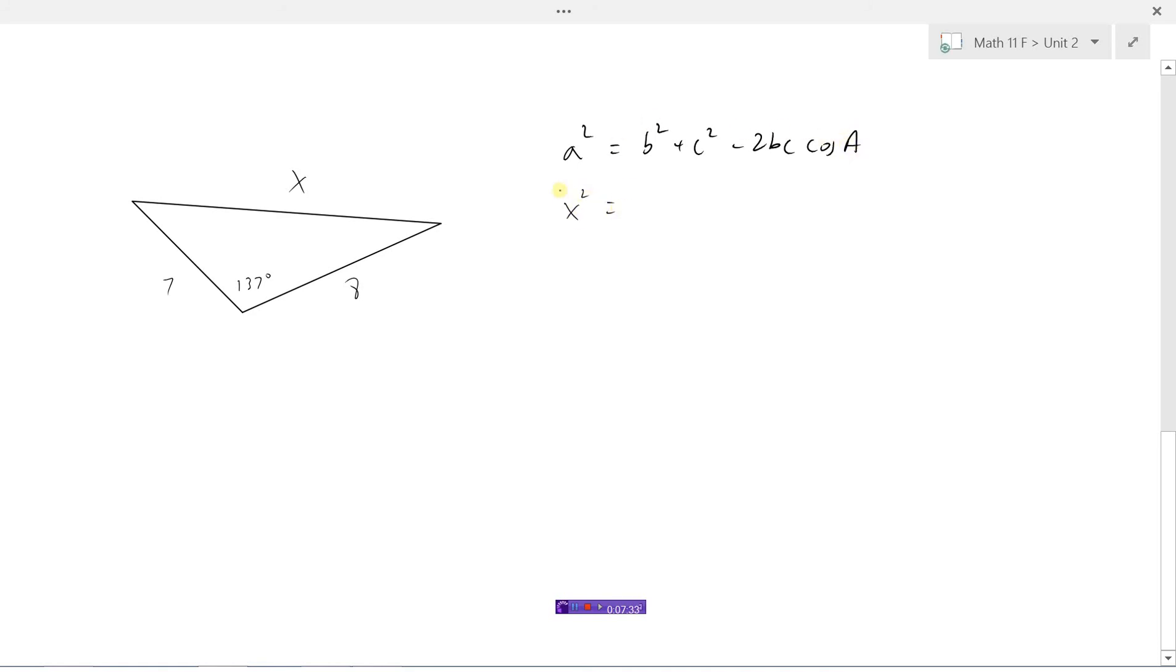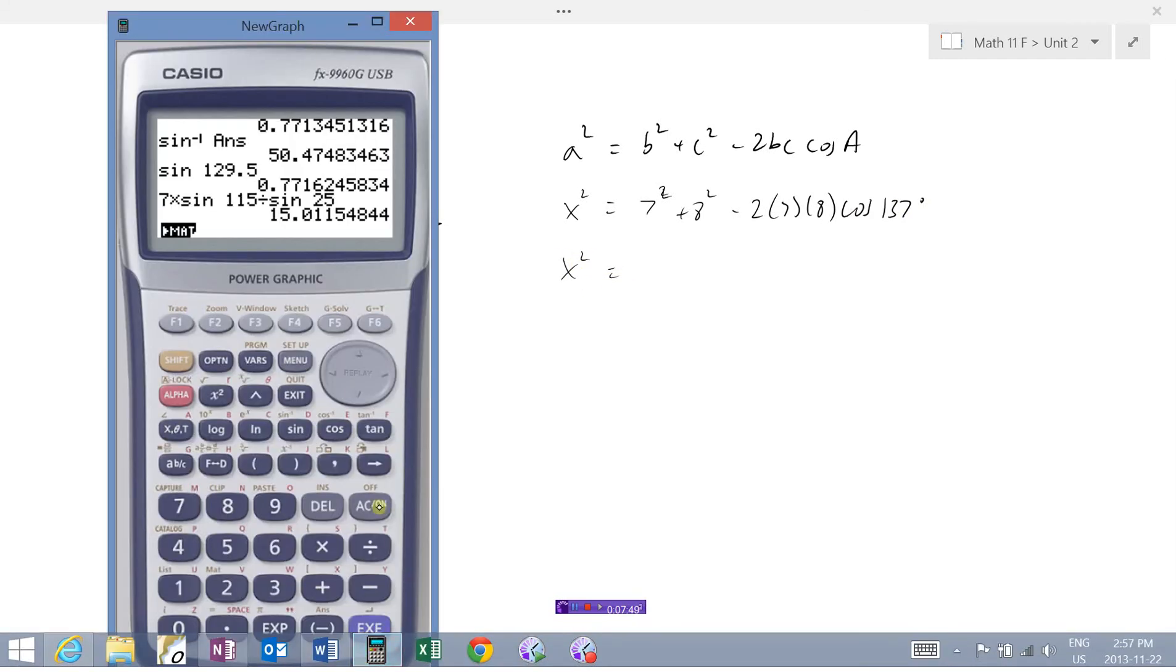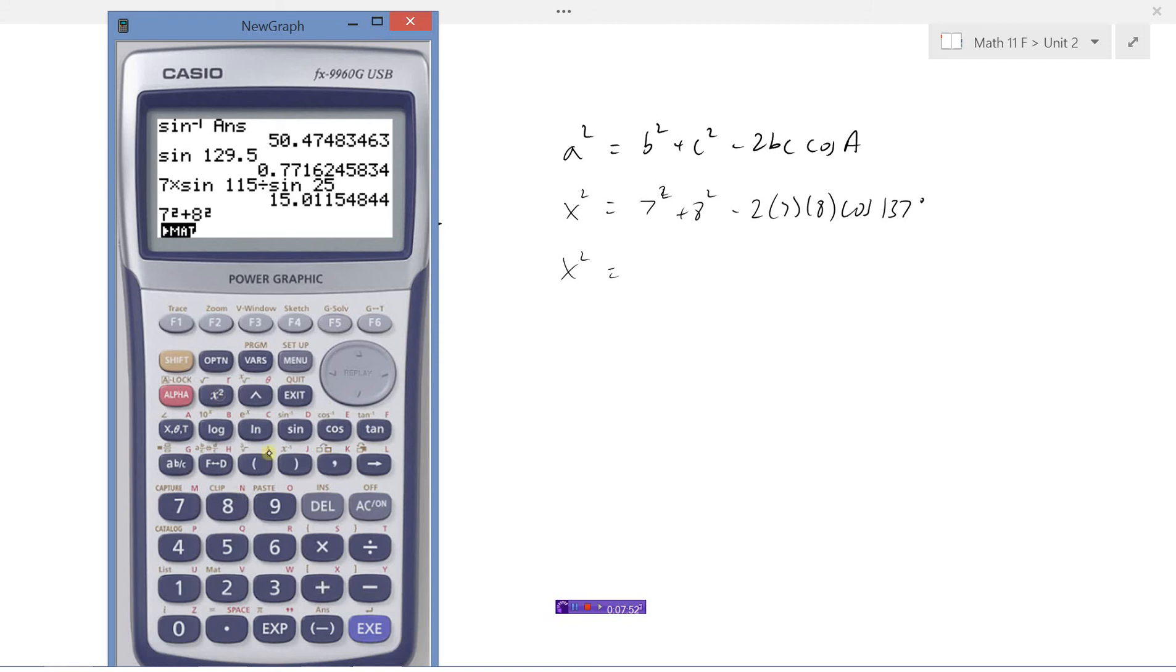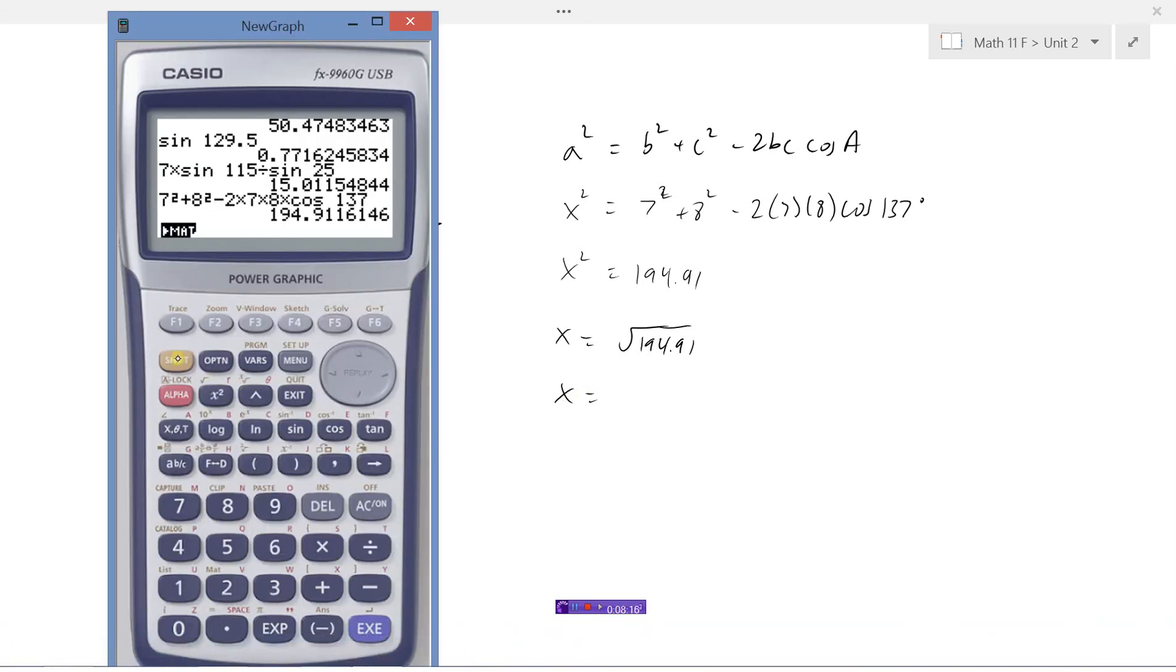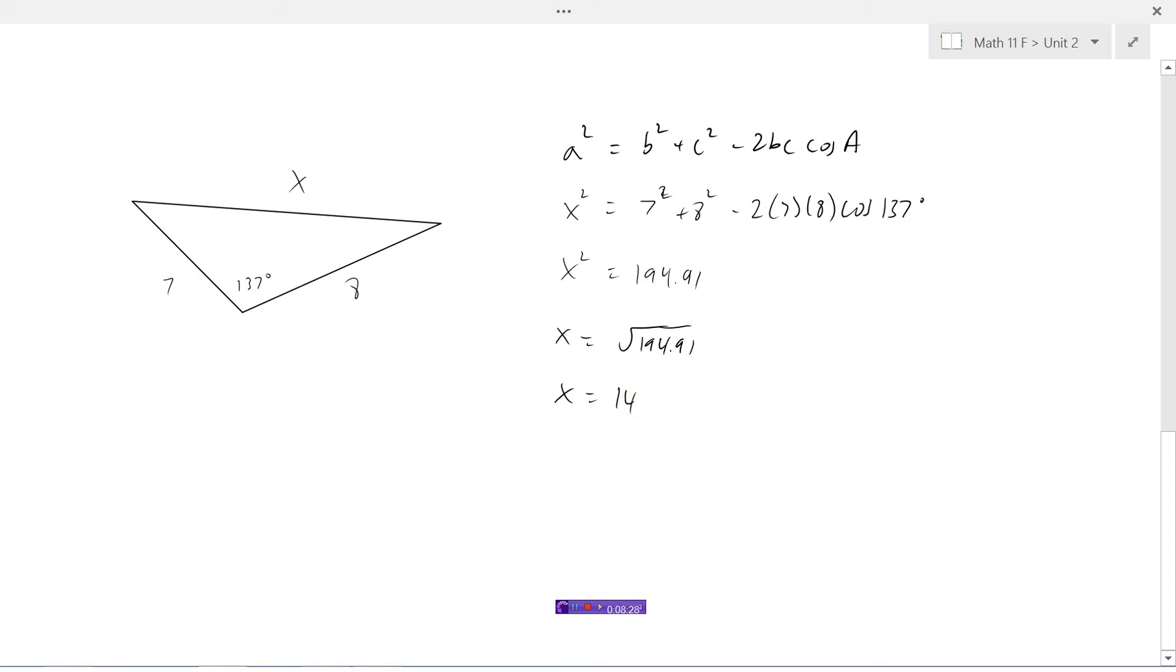So if I'm trying to find the opposite side, the other two sides squared and added together, minus 2 times 7 times 8 times the cosine of the angle in between. Work this out on the calculator. 194.91. So x will equal the square root of 194.91, which is 13.96. So if we round to the nearest whole number, just say is 14. So side x would be 14.